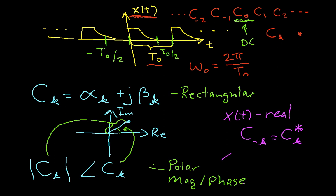It also turns out that if x of t is even, then c sub k is real. So if x of t is an even function, then the Fourier series coefficient will have no imaginary part.